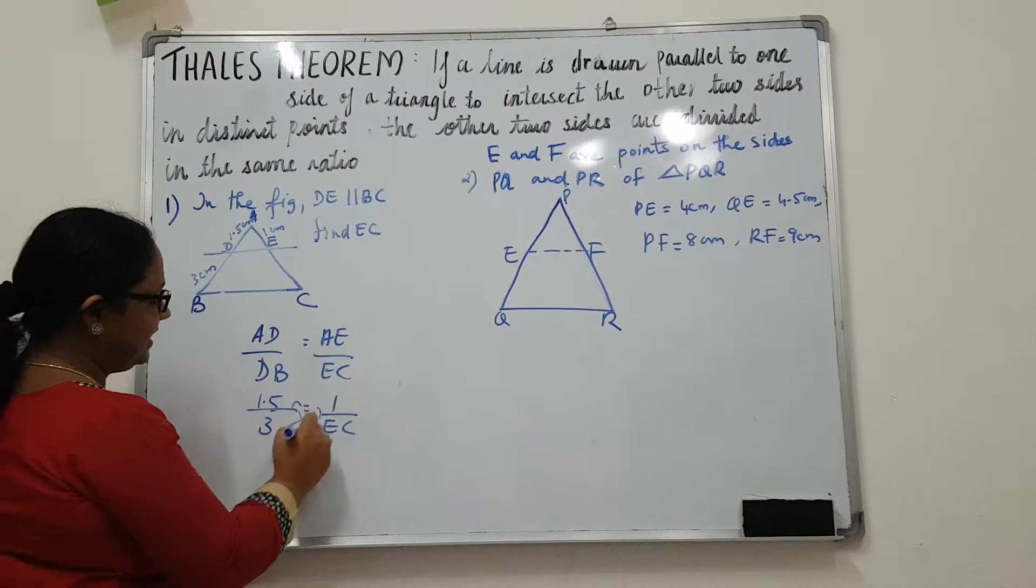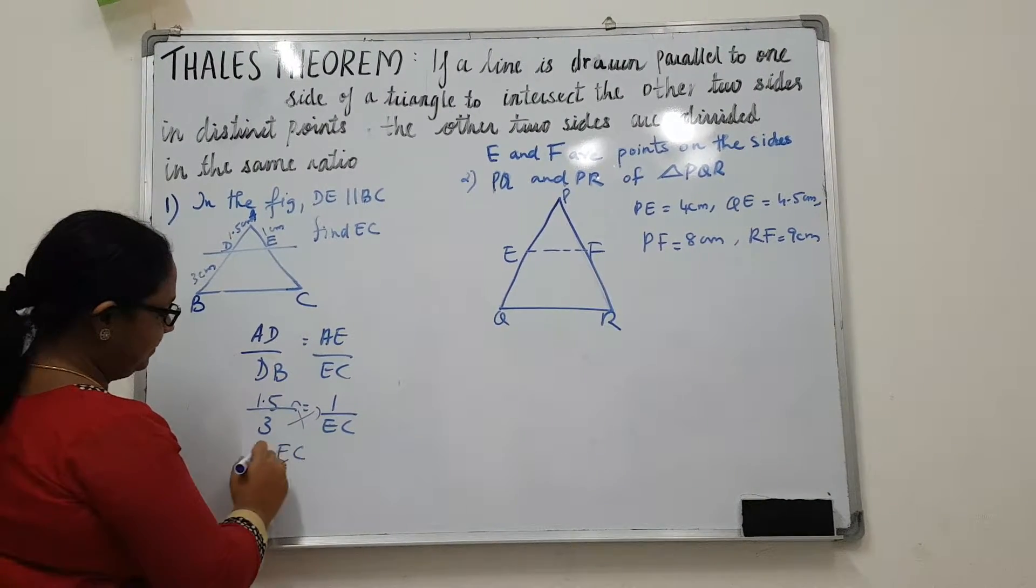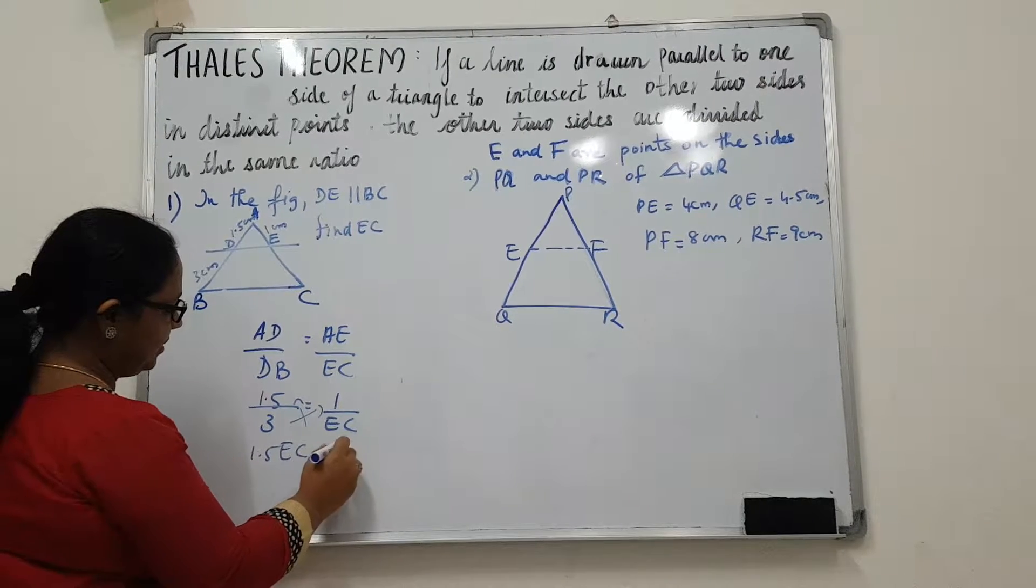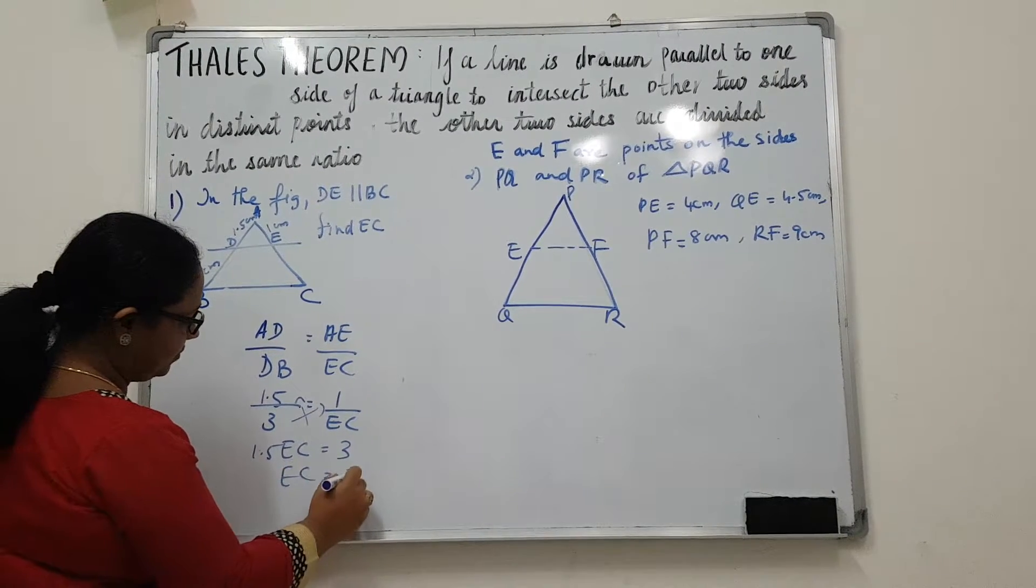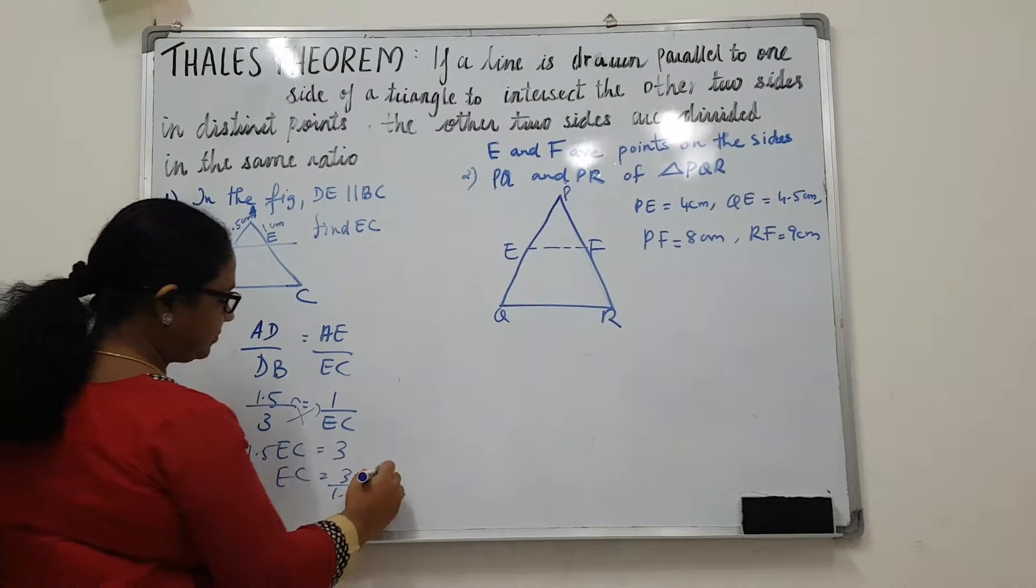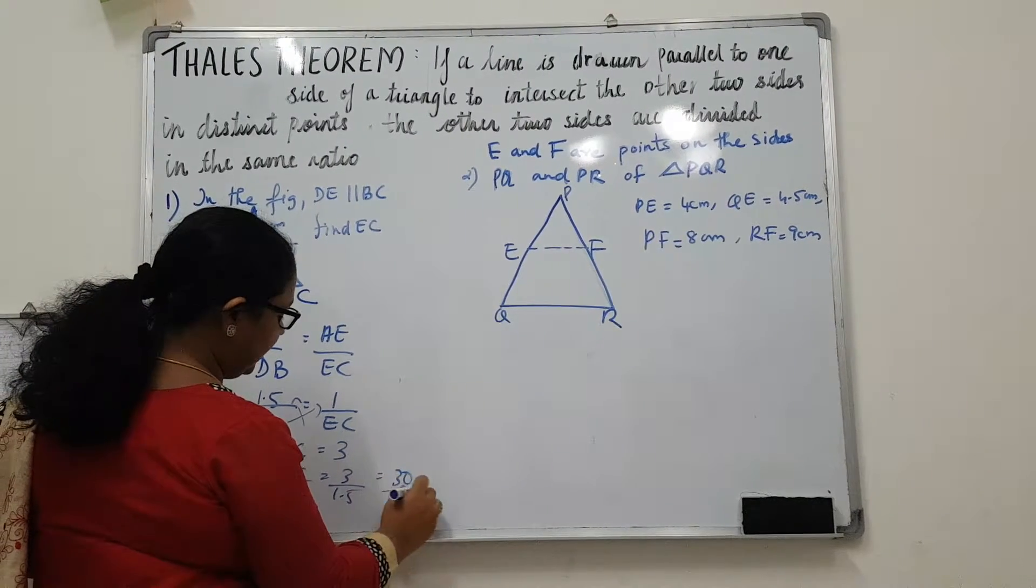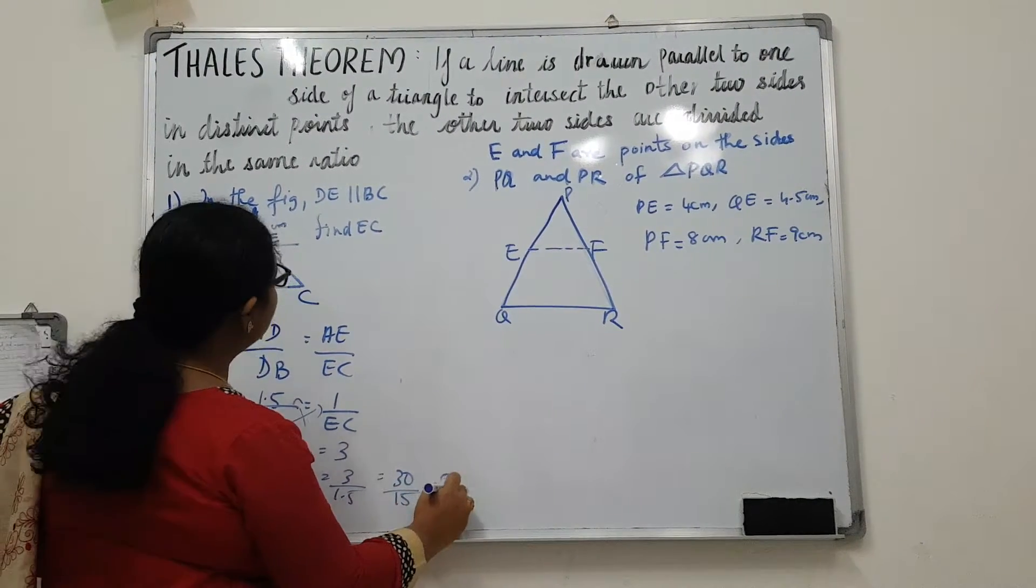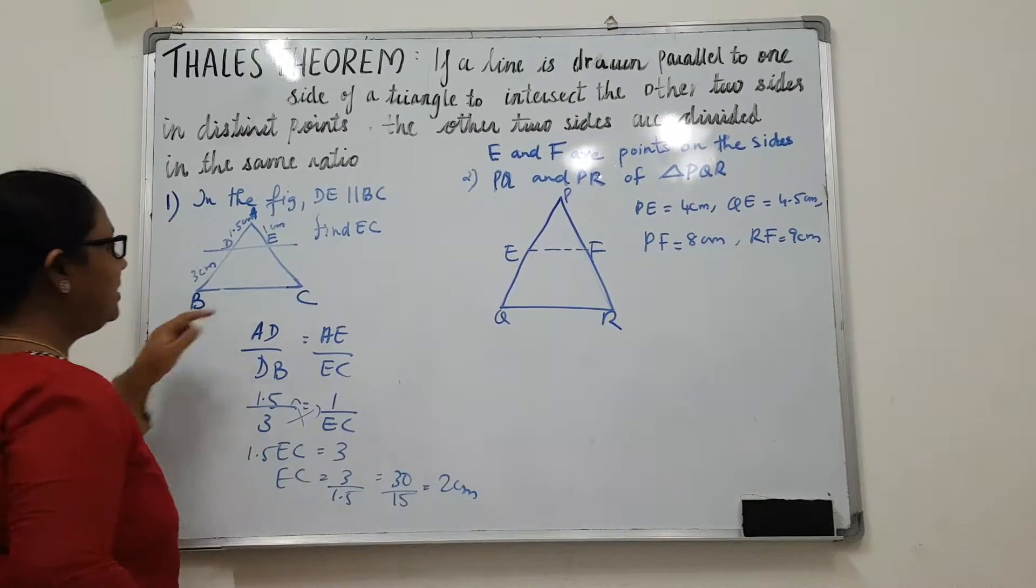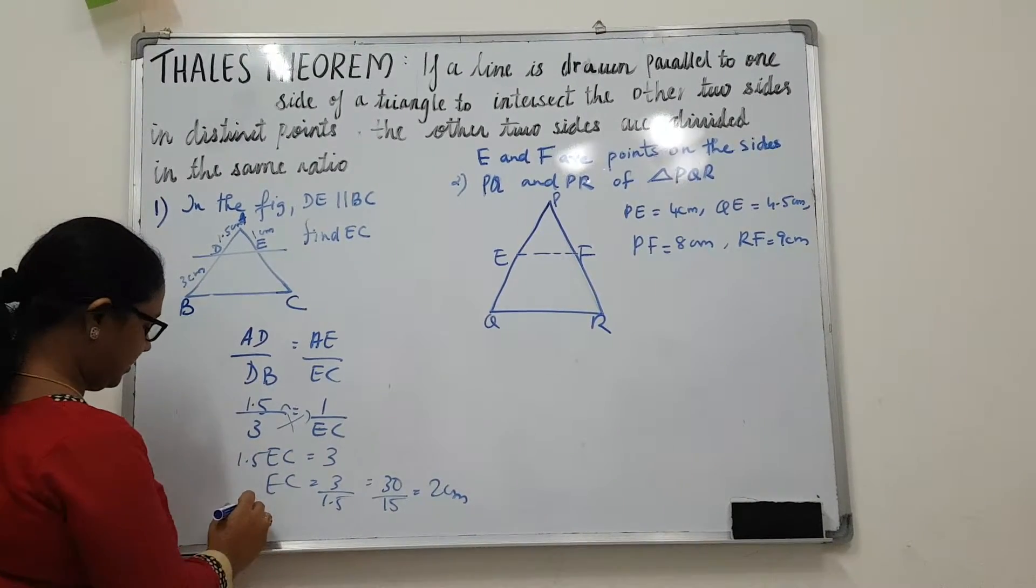Just cross multiply, you will get the value. So EC, 1.5 into EC equals 3. So 3 by 1.5 or we can write 30 by 15 which is 2 cm. Therefore, EC is equal to 2 cm.